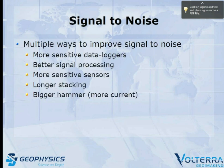One thing would be to make more sensitive data loggers, which I think we have under control. Better signal processing can always help, and I think we have a good handle on that. Then I decided to look at sensors, longer stacking, and actually what everybody loves — the bigger hammer. Get a bigger transmitter and we can see deeper. It's easy to sell, too.